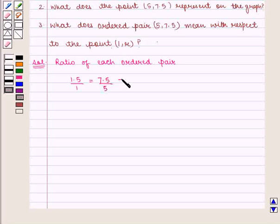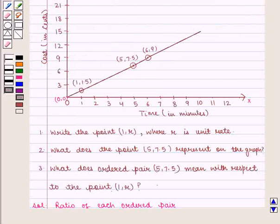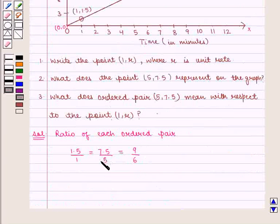And is equal to 9 upon 6. We observe that each ratio is equal to 1.5, which is constant.